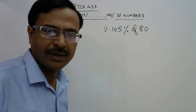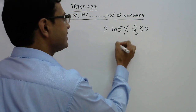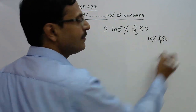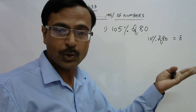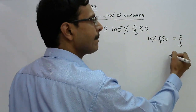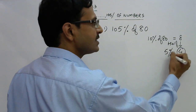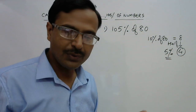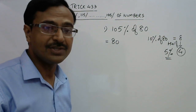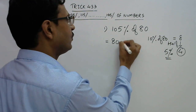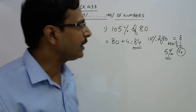For 105% of 80: leave aside 100% and focus on what's above — that's 5%. 10% of 80 is 8, and half of 8 is 4, which is 5% of 80. Now add the original number 80 (which is 100%) plus 4 (which is 5%) to get 84. So 105% of 80 is 84.